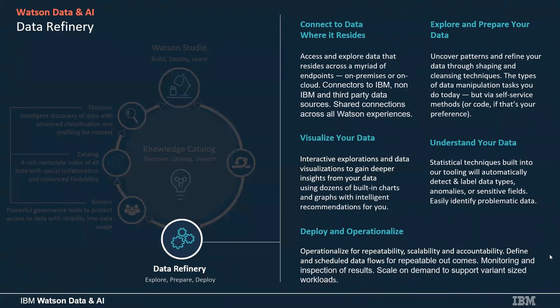You also have the opportunity to deploy and operationalize what's known as a data flow. You put together a transformation — maybe 12 steps in your data preparation recipe — save it, and run it immediately or schedule it to run on a repeated basis for repeatable outcomes. The Data Refinery is included with Knowledge Catalog and also with Watson Studio, so it's always available for the data preparation step.